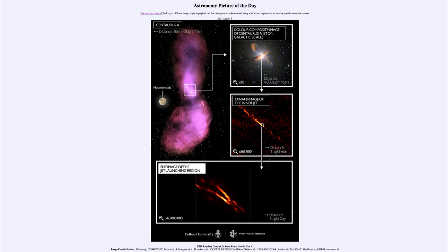The Event Horizon Telescope has begun imaging black holes. It's called the Event Horizon Telescope because it can actually see the shadow of the event horizon. While we can't see a black hole directly because it does not give off any light, we can see its shadow as it blocks out light from behind it from getting through.